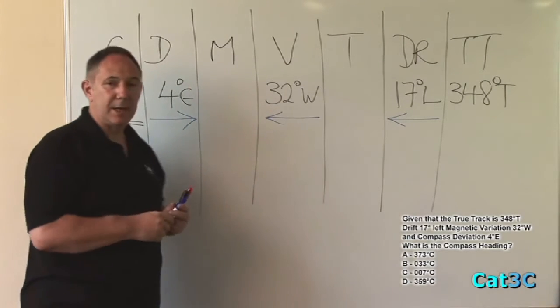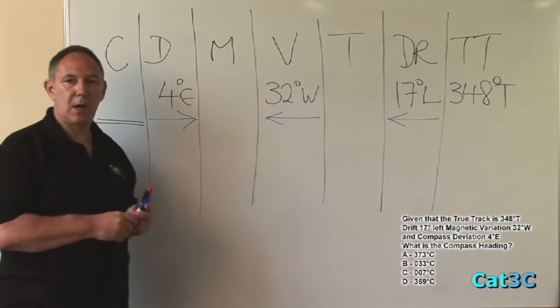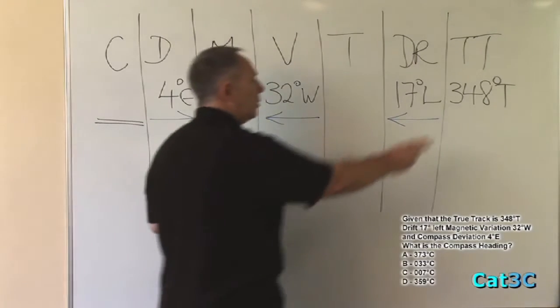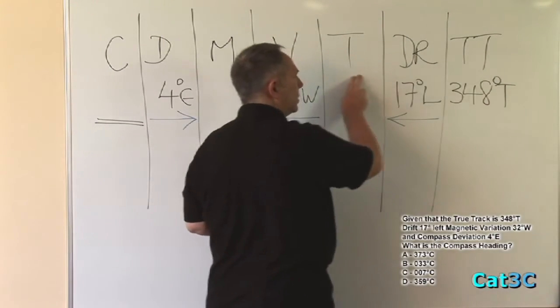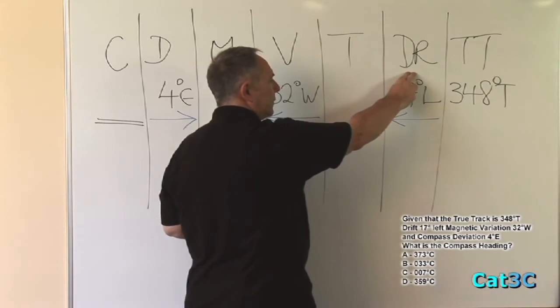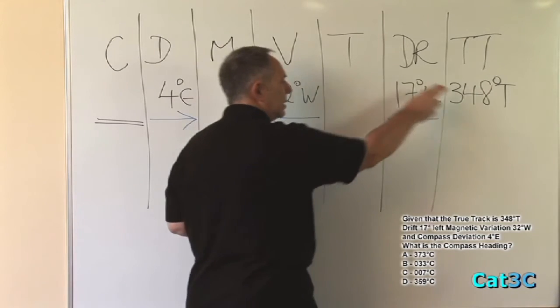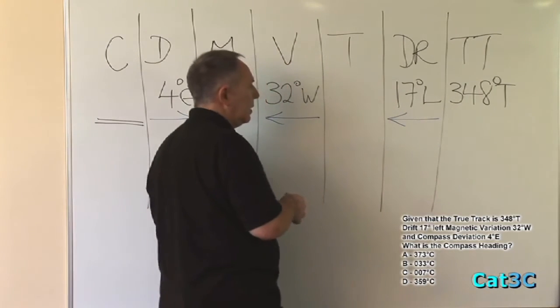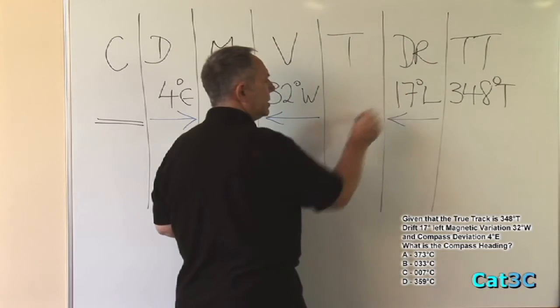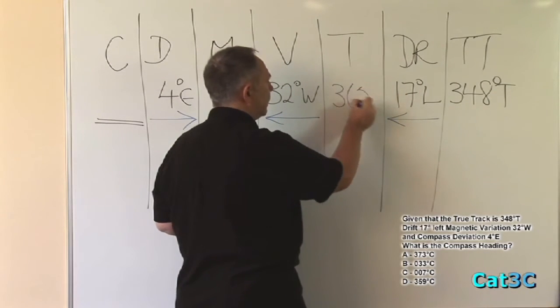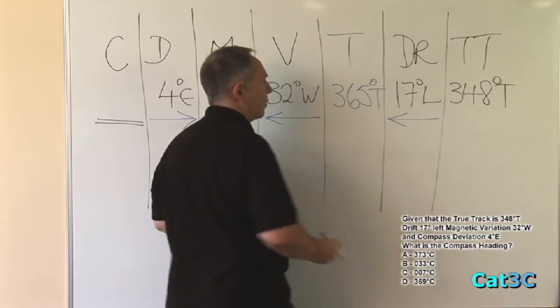The arrow in each case points to the larger number in each part of the calculation. So to go from true track to true heading, via drift, the arrow identifies for us that true heading is greater than true track. Therefore, 348 plus 17 is 365 degrees true.